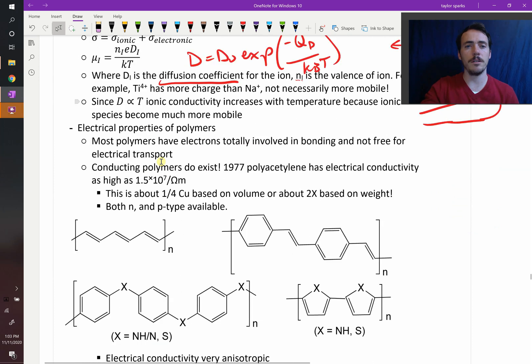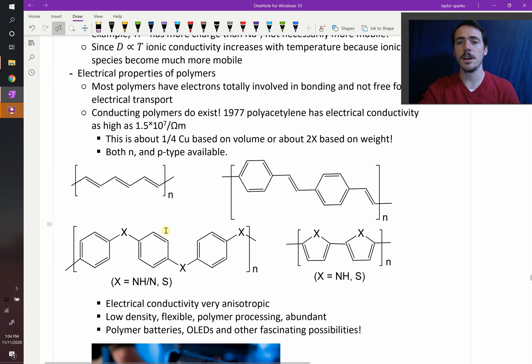Now what about polymers? Polymers, again, the electrons are usually tied up in bonds and so they're not available to conduct. But that all changed in 1977 in the compound polyacetylene. It had electrical conductivity that was actually quite high, 1.5 times 10 to the 7 per ohm meter. So this is about a quarter of copper based on volume and it's about two times the conductivity of copper based on weight. This led to a dramatic revolution in conductive polymers.